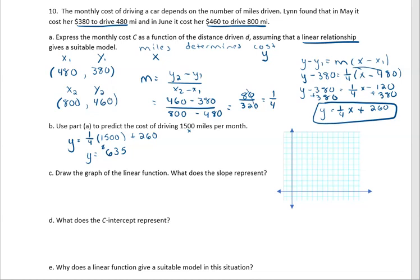Draw the graph of the linear function. What does the slope represent? So now we need to draw our graph. We need to have our Y intercept at 260. So if I make this 100, this 200, oh that's not going to give us enough space. So let's make this 100 and this 200. So 260 would be right about here. And then our graph is one fourth, so that means that we would have a rise of one and a run of four.